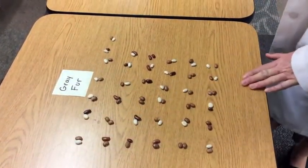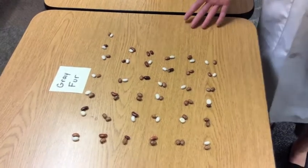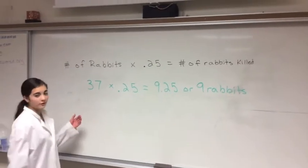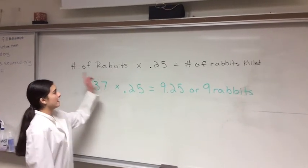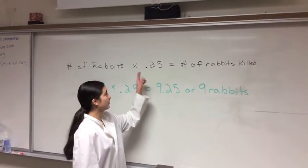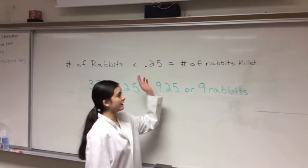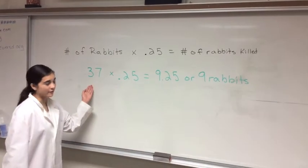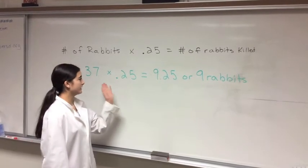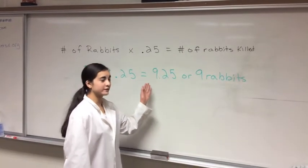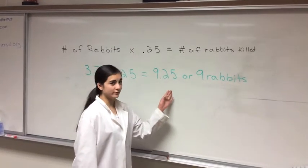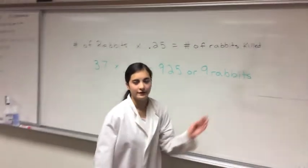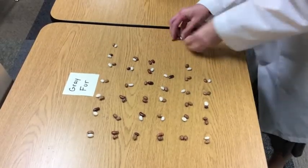In our case, we have 37 rabbits. Now we have some math to do. Take the number of gray fur rabbits you have and multiply it by 0.25 — that equals the number of rabbits you will kill. In our case, we had 37 rabbits times 0.25, which equals 9.25. We round to the nearest whole number, so that's 9 rabbits to remove. Make sure you remove 9 of them randomly.